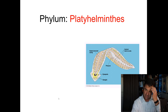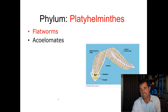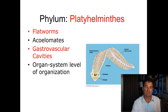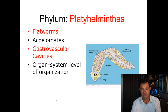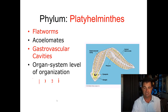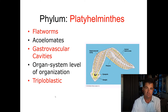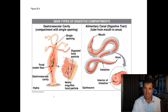The first phylum we're going to talk about is the phylum Platyhelminthes. These are the flatworms, and they are acoelomates. They have a gastrovascular cavity, as do the cnidarians we mentioned before, and they have an organ system level of organization. So first we started with cells, then we went to tissues, and now we're seeing that these animals have actual organs. They are triploblastic, which means they have three tissue layers: ectoderm, endoderm, and mesoderm — the total three found in all animals from here on out.